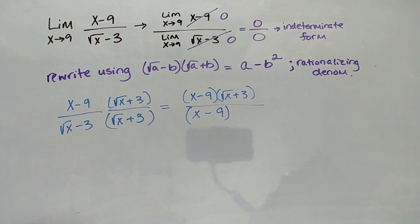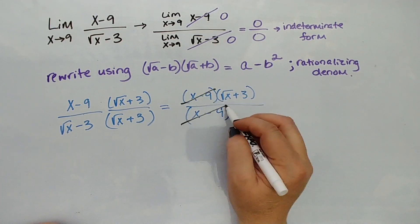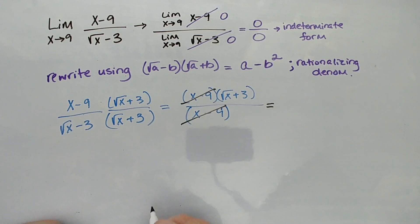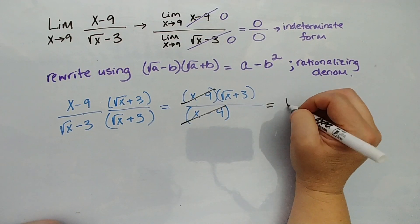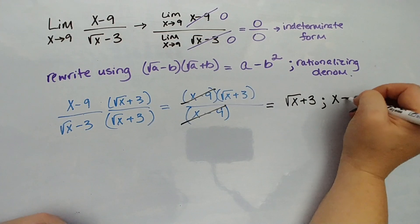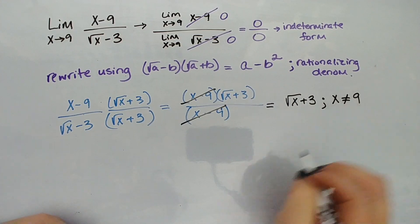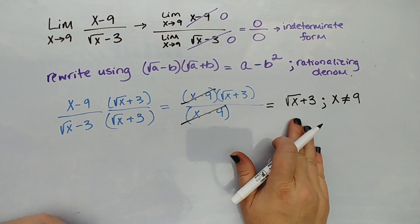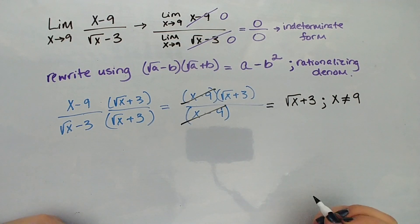Then we get this lovely little thing where we can divide out x-9 over x-9, and our equivalent form is √x + 3. I know what you're thinking: how in the world are those two things equivalent? They are equivalent for all values where x is not 9. So there could be a hole in the graph, something weird is happening at this function for x equals 9.